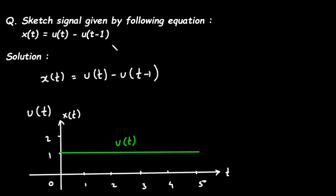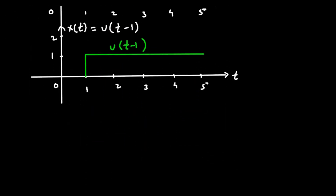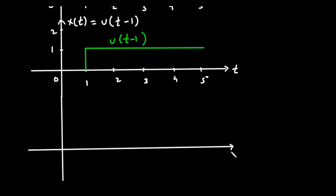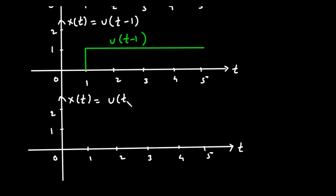Now next, what we have to do is subtract this signal minus this signal. So the next step will be like this. We draw a new axis with t values 1, 2, 3, 4, 5 and amplitude values 0, 1, 2 and so on. This is x of t is equal to u of t minus u of t minus 1.